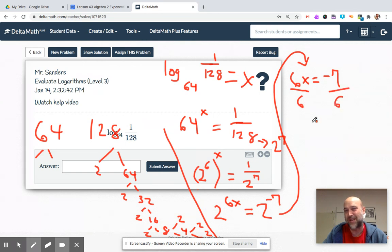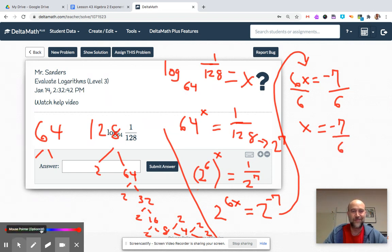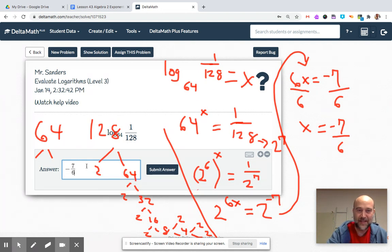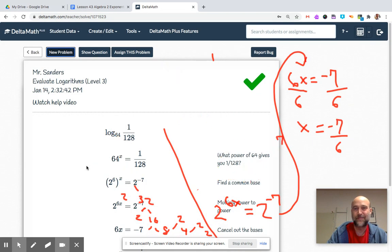Trial and error on some of these. No easier way on this one, at least for me. Negative seven divided by six. Got it. It's not magic, you just got to experiment to figure it out.